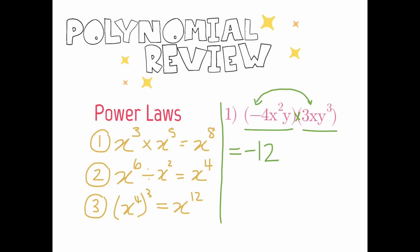Then we look at the exponents. We have x to the power of 2 times x to the power of 1 — if there's no number, you can put in a 1. Using our power laws, both bases are the same, so we add the exponents: 2 plus 1 gives us x to the power of 3. We do the same with the y's: y to the power of 1 times y to the power of 3. The bases are the same, and 1 plus 3 gives us 4. Our final answer is negative 12x³y⁴.